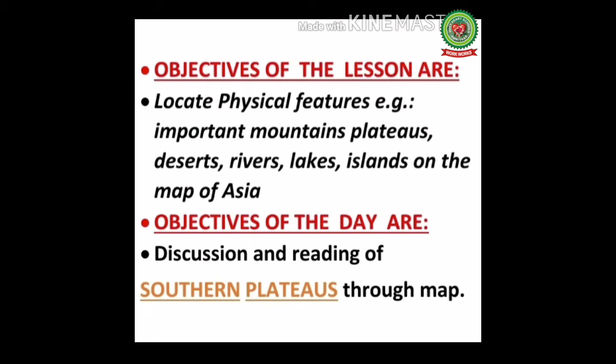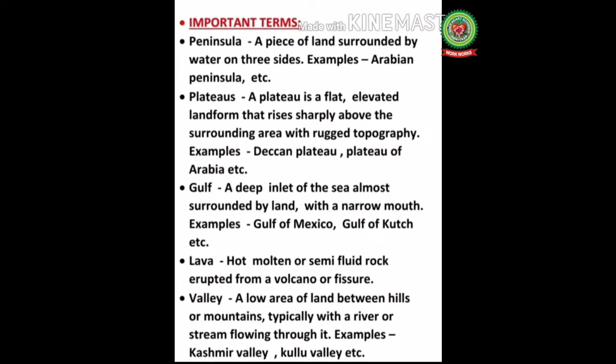Today we are going to focus on southern plateaus. First we discuss the important terms. Peninsula: a piece of land surrounded by water on three sides, for example the Arabian Peninsula. Plateau: a flat elevated landform that rises sharply above the surrounding areas with rugged topography, examples include the Deccan Plateau and the Plateau of Arabia.